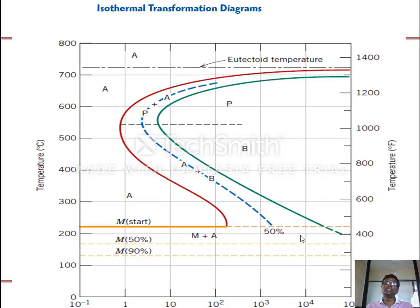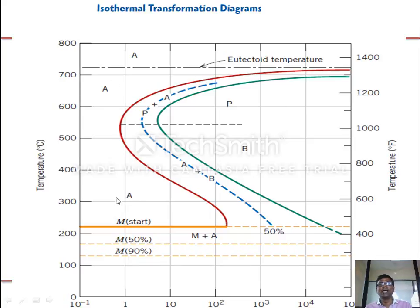The eutectoid temperature is 727°C. Starting with gamma austenite and slowly cooling it, the material passes through different phases. The pearlite region and austenite region are visible on the diagram. Below about 550°C there is another phase called bainite. Each phase has different mechanical and physical properties.